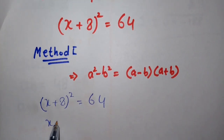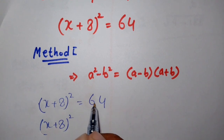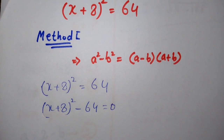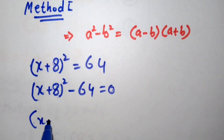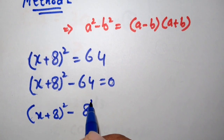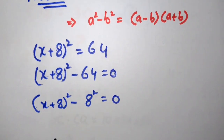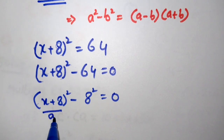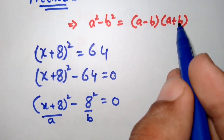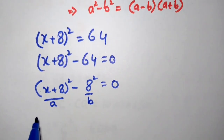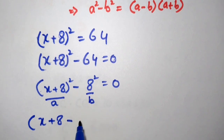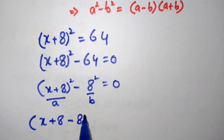We move 64 to the left side: (x + 8)² - 64 = 0. Now (x + 8)² - 64 can be written as (x + 8)² - 8² = 0. Here we let a = (x + 8) and b = 8, and we apply the identity (a - b)(a + b).